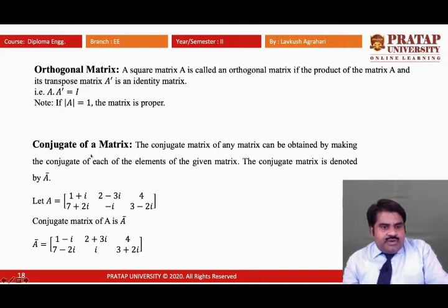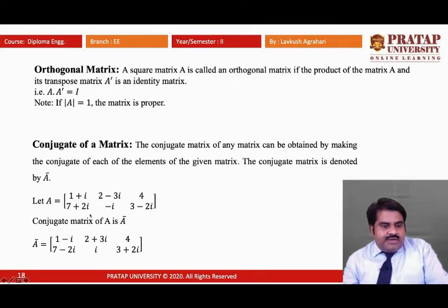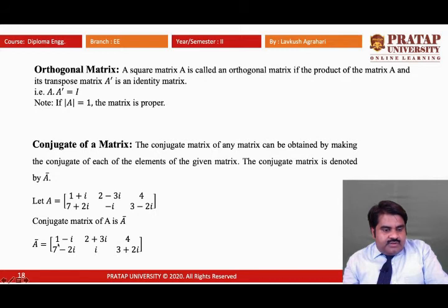Now, the conjugate matrix. The conjugate matrix of any matrix is obtained by taking the complex conjugate of each element. The conjugate matrix is denoted by Ā. In the example, matrix A has two rows and three columns; taking the complex conjugate of each element, we obtain a new matrix with entries 1-i, 2-3i, 4, 7-2i, i, 3+2i. This is the conjugate matrix Ā.